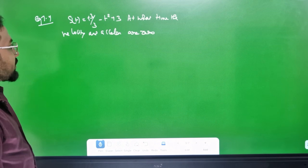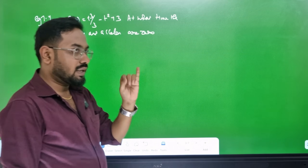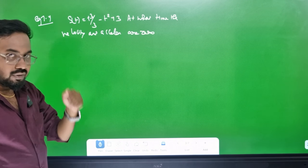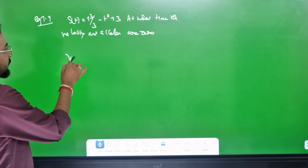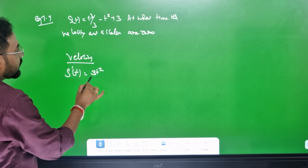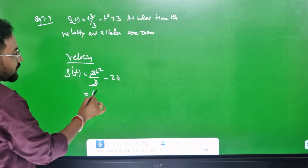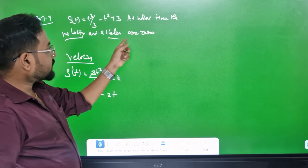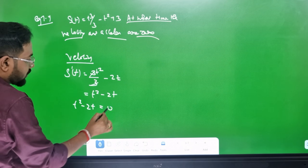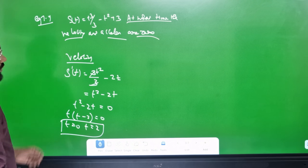The value is equal to 7.4. If x equals 1, the value equals 0. At what time will the velocity and acceleration be 0? Velocity equals ds by dt. The function s involves t. Velocity ds by dt: differentiate s with respect to t gives t squared minus 2t. Set velocity equal to 0: t squared minus 2t equals 0. So t equals 0 or t equals 2.